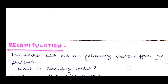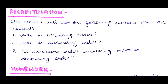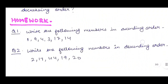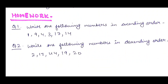After explaining the concept, we will come to the recapitulation part. The teacher will ask the following questions: What is ascending order? What is descending order? Is ascending order increasing order or decreasing order? Then we will give them homework. Question 1: Write the following numbers in ascending order — 1, 9, 4, 3, 17, 14. Question 2: Write the following numbers in descending order — 2, 17, 44, 19, 20. This homework will allow students to practice the concept they have learnt.